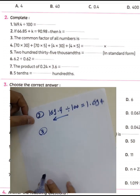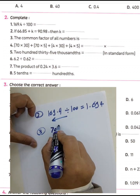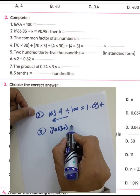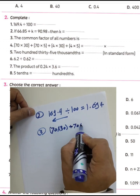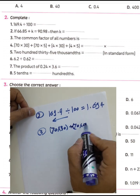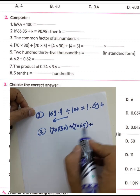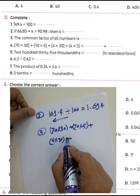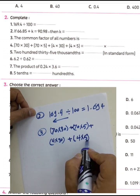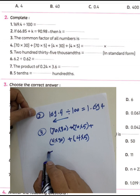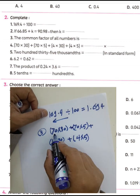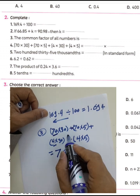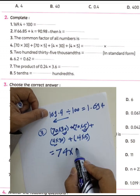Question number three: we have 70 times 30, plus 70 times 5, plus 4 times 30, plus 4 times 5. We can write the first number as 70 plus 4, which is 74, multiplied by the second number 30 plus 5, which is 35. So this represents 74 times 35 in expanded multiplication.